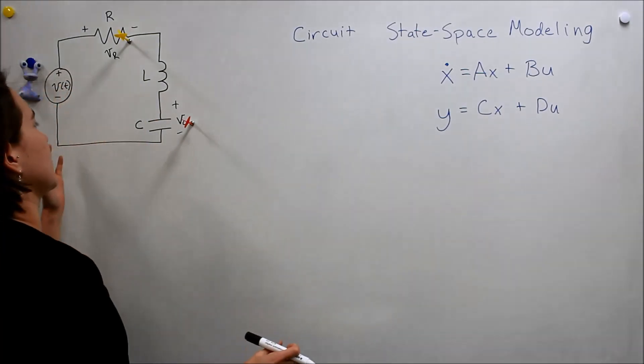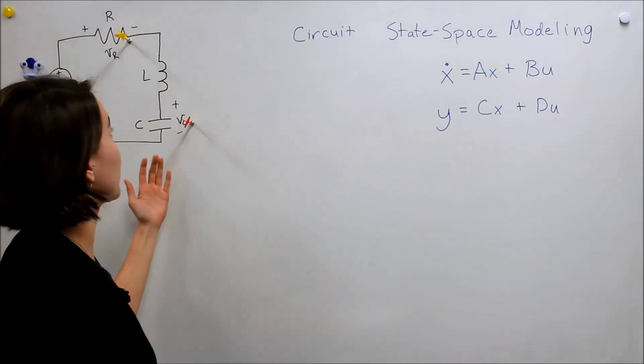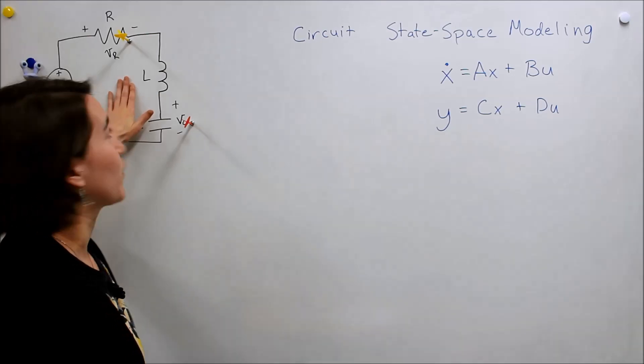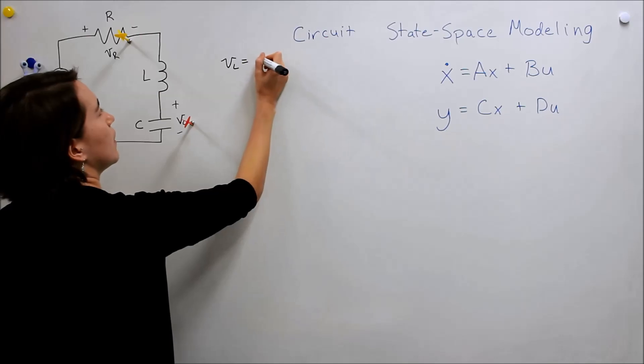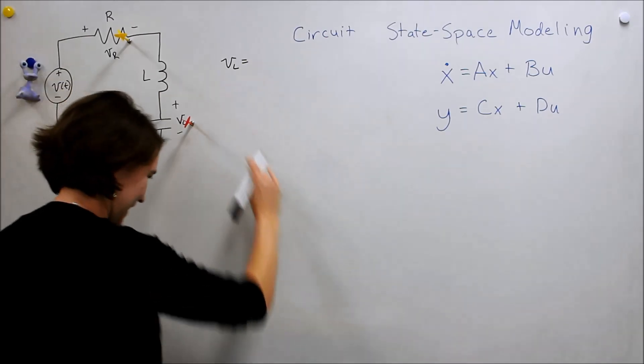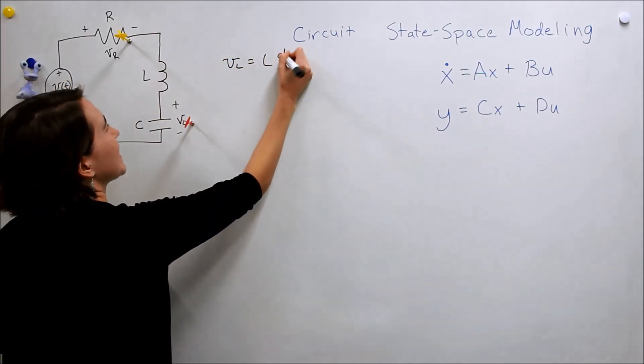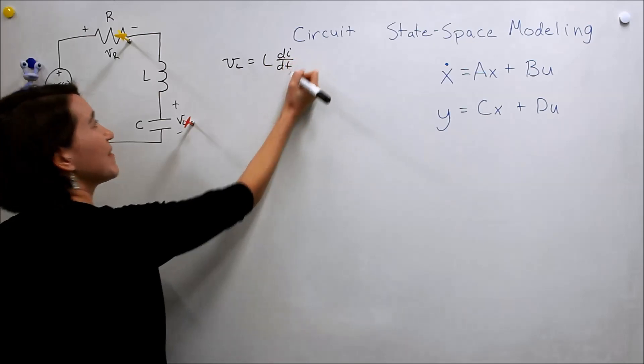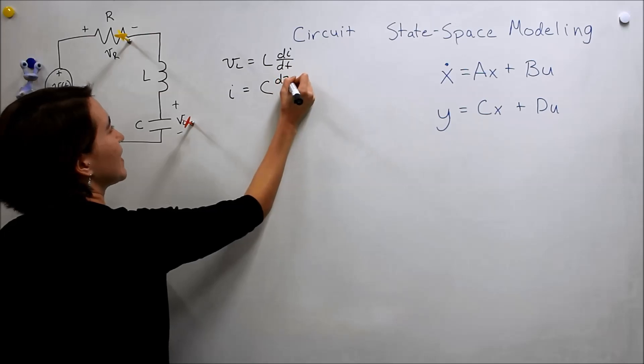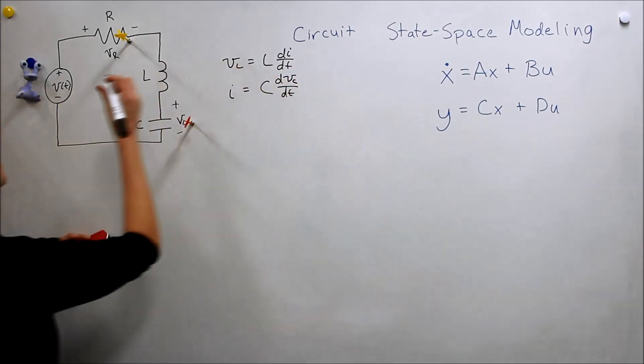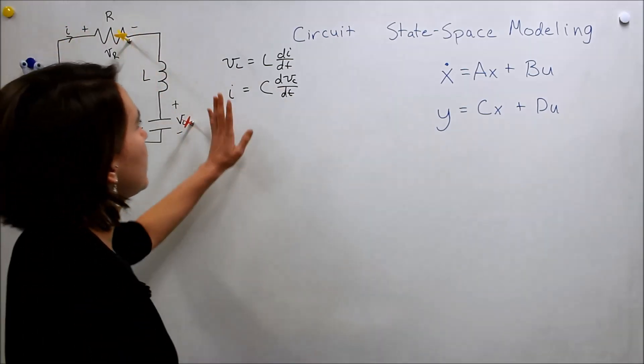So where do we start on this? I'll give you my approach for working with circuits. If we remember the equation for a capacitor and inductor: V equals L dI/dt, and I equals C dV/dt. Here we're defining the current the same through all of them, and then each of these voltages. So these are our equations, and we have this derivative here.